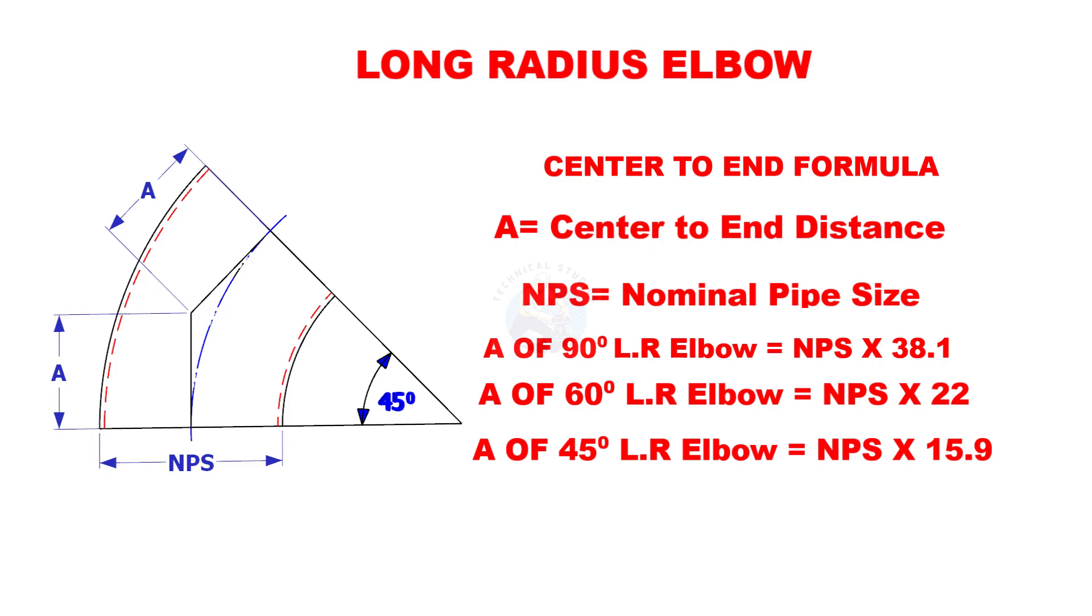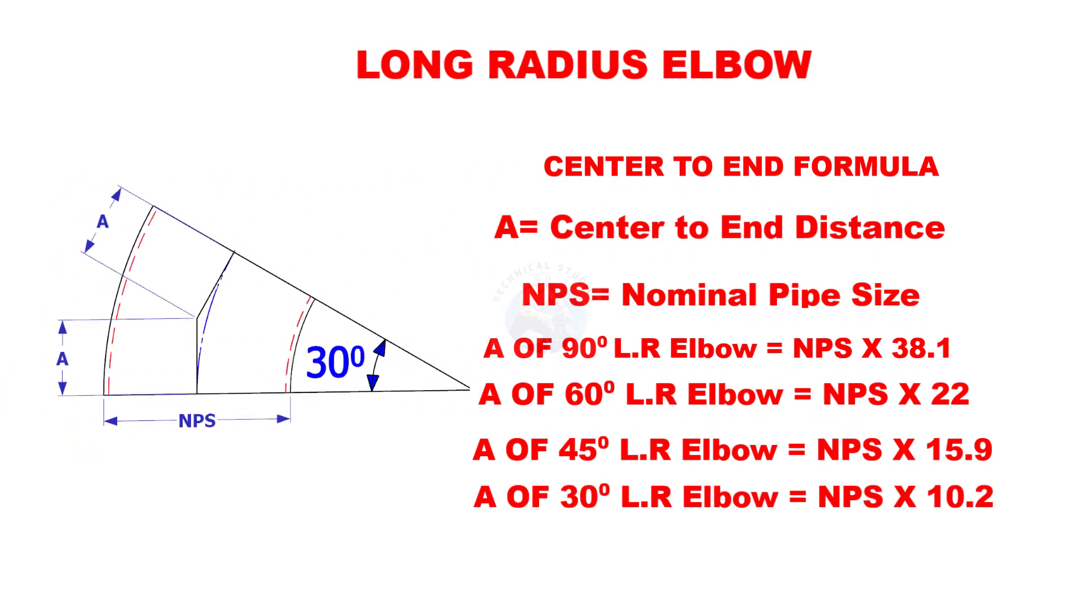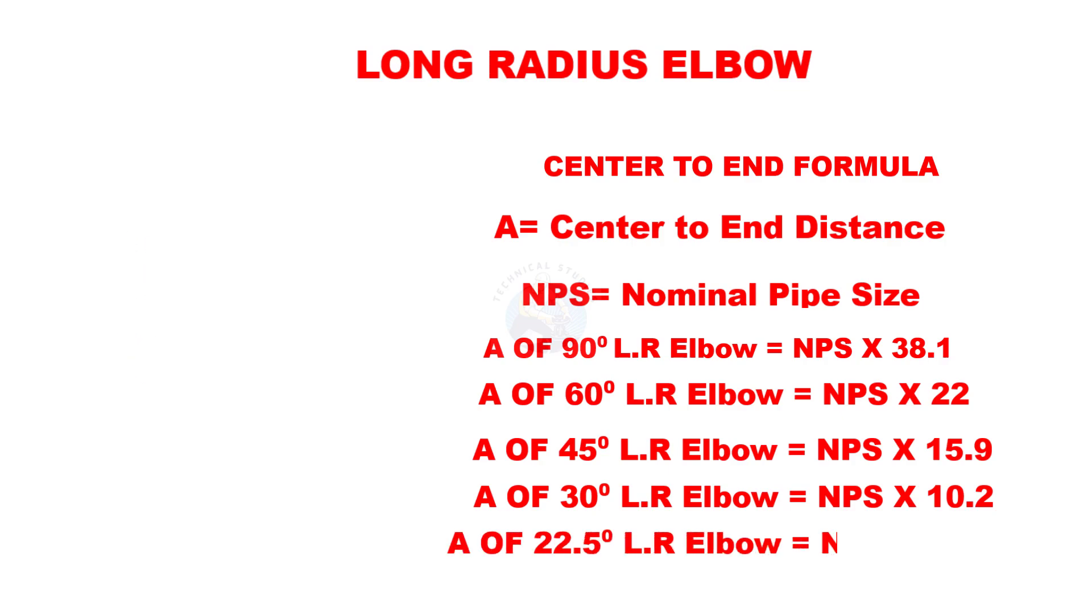A of 45 degree long radius elbow is nominal pipe size multiplied by 15.9. A of 30 degree long radius elbow is nominal pipe size multiplied by 10.2. If the degree is 22.5, multiply the nominal size by 7.57.